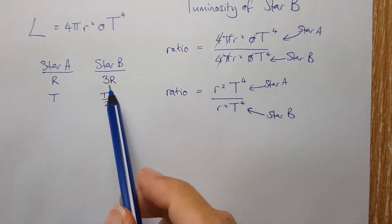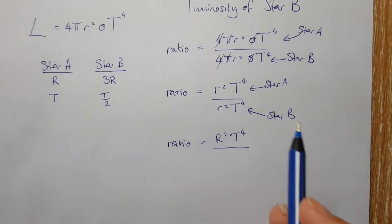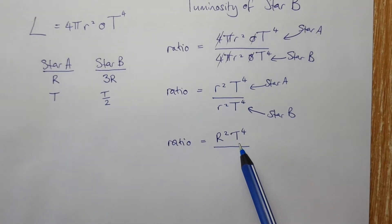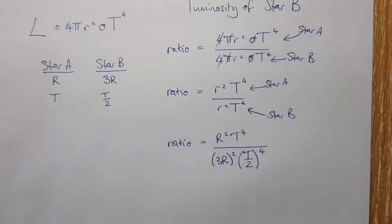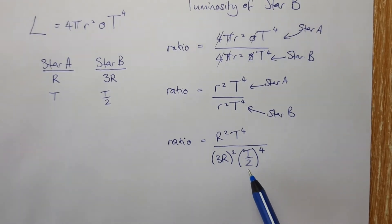And now we're actually going to put these values in there. The radius of star A is capital R and its temperature is capital T. But the radius of star B is three R and its temperature is T over two.